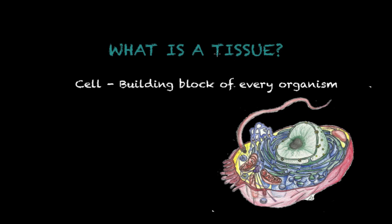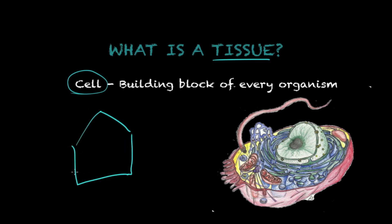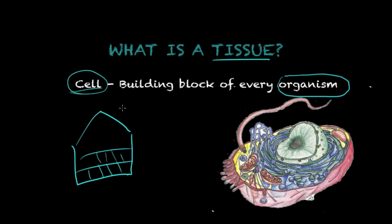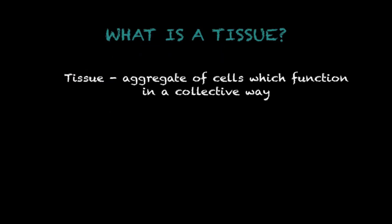Before I give you the definition of what a tissue is, I need to talk about the cell. If you look at a house, a house has different blocks that build it. And every organism out there, including yourself, has building blocks — and their building blocks are going to be cells. So a tissue is going to be an aggregate of cells which function in a collective way.